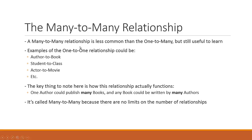Examples of the many-to-many relationship could be author-to-book — many authors can publish many books, and many books can be published by many authors — student-to-class, and actors-to-movies. All of them have spaghetti-like cross-references to each other, or at least could have many spaghetti-like cross-references to each other.